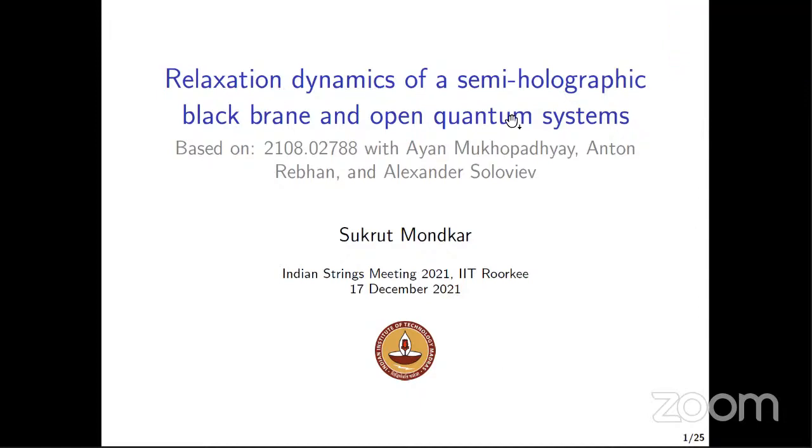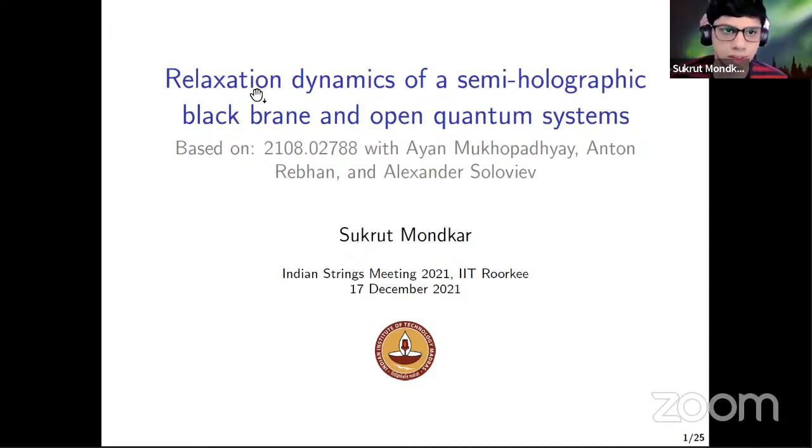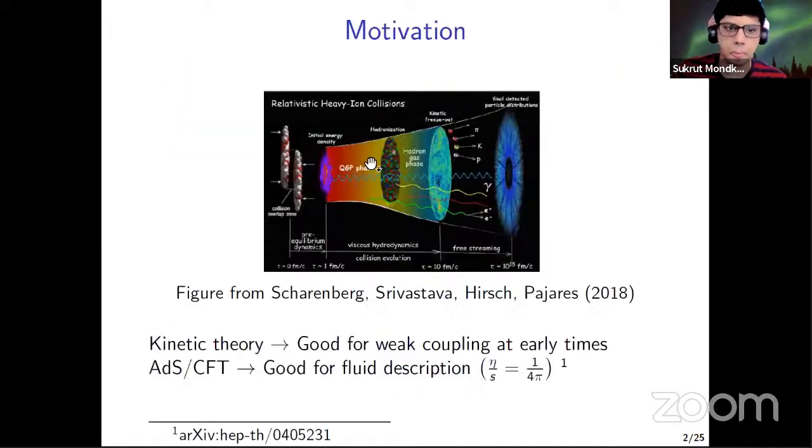Yeah, so thank you for the opportunity to speak in this conference. Now, yeah, the title is this, relaxation dynamics of semi-holographic black brane and its connection to open quantum systems. And it is based on this paper. Yeah, so this figure is a schematic of heavy ion collision experiments where two heavy nuclei traveling at ultrarelativistic speed collide with each other and that produces a deconfined state of quarks and gluons at very high temperatures and densities.